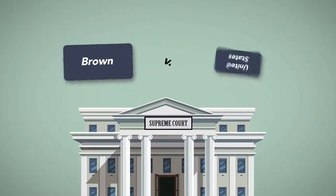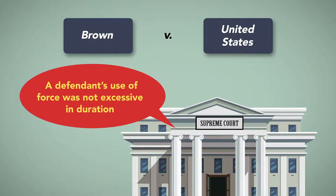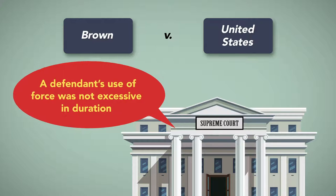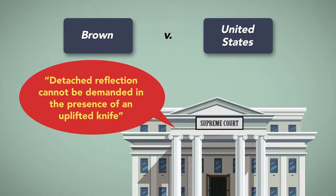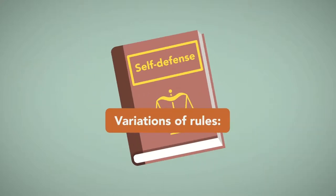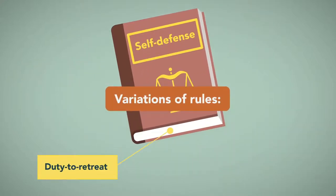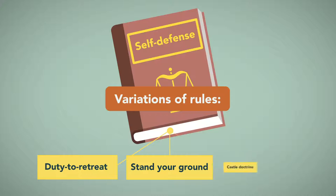The Supreme Court addressed this issue in Brown v. United States. There, in opining that a defendant's use of force was not excessive in duration, the court stated that detached reflection cannot be demanded in the presence of an uplifted knife. Variations of rules applicable to self-defense include the duty to retreat, stand your ground, and castle doctrine rules.